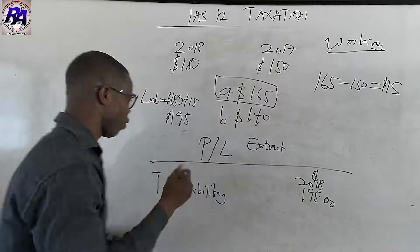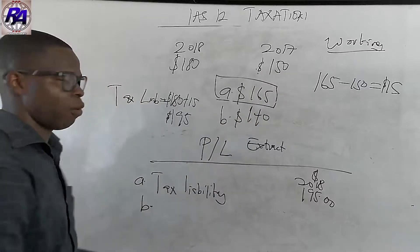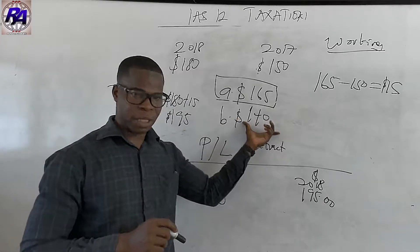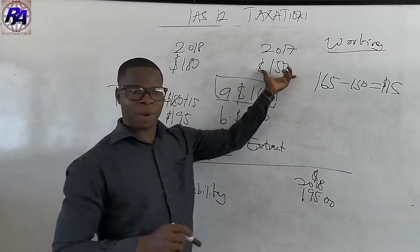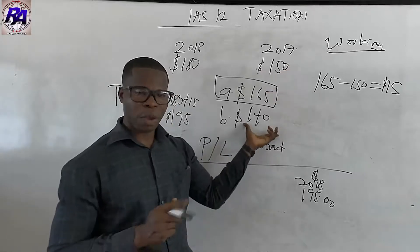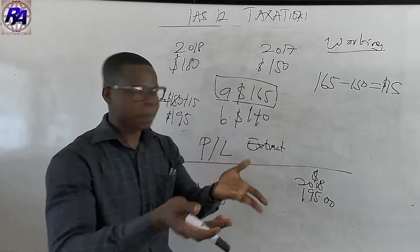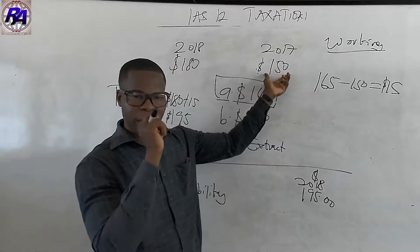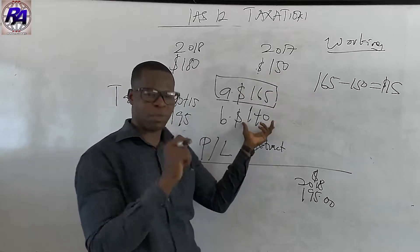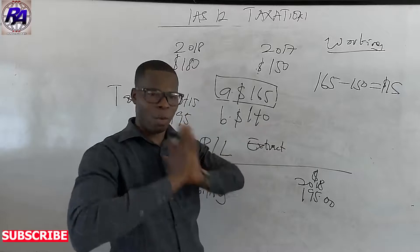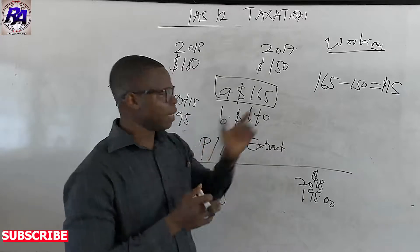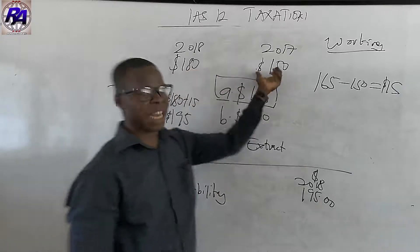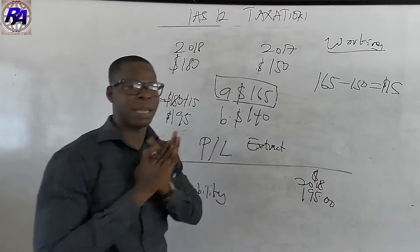Now let's look at the second scenario — Scenario B. Assuming the actual tax paid was $140. They provided for $150, but the actual tax paid was $140. So this is over provision. We are taking this amount from our profits, reducing our profit — but this is the actual expense we were supposed to deduct. So this is over provision. This has to reduce our tax element in the next period, whereas under provision increases our tax in the next period.